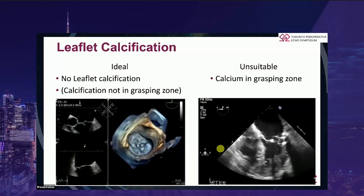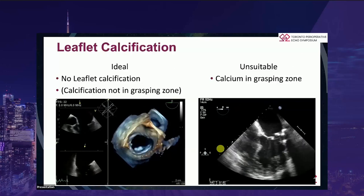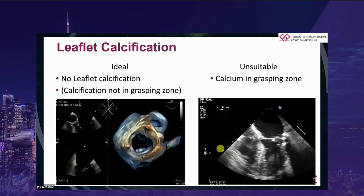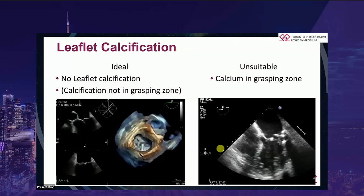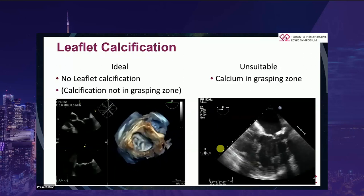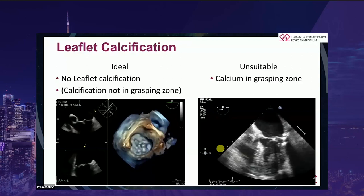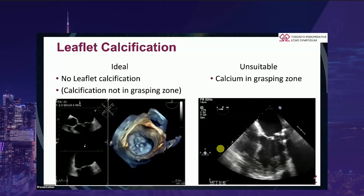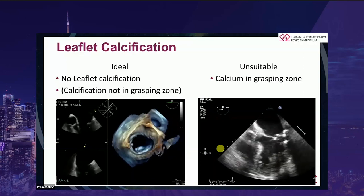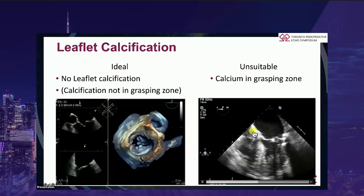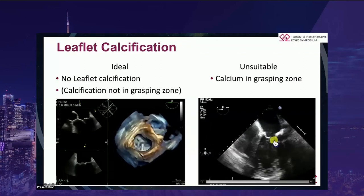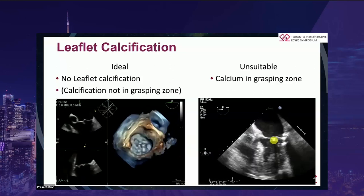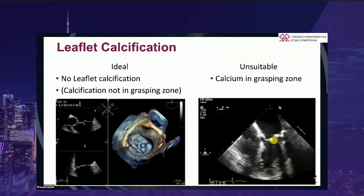Leaflet calcium: while annular calcification and some leaflet calcification may be acceptable, there have been case reports of leaflet tearing in regions of calcification, so that may be a region for concern, but not in and of itself an exclusionary criterion. However, if the calcium is in the grasping zone — as you can see in the right-hand image, that lump of calcium right on the edge of A2 — that's going to impede closing of the device and would run the risk of single leaflet detachment.